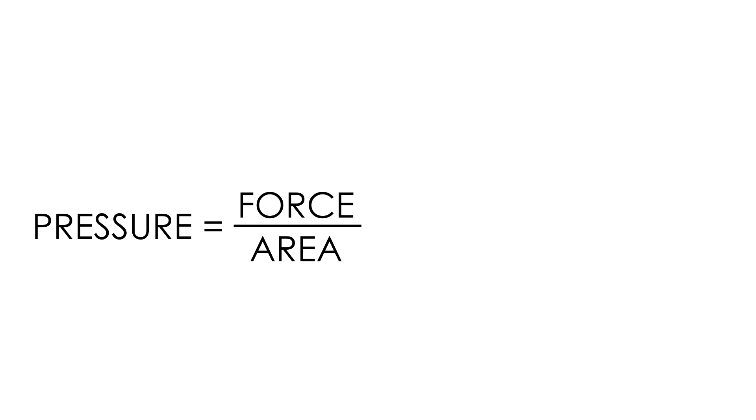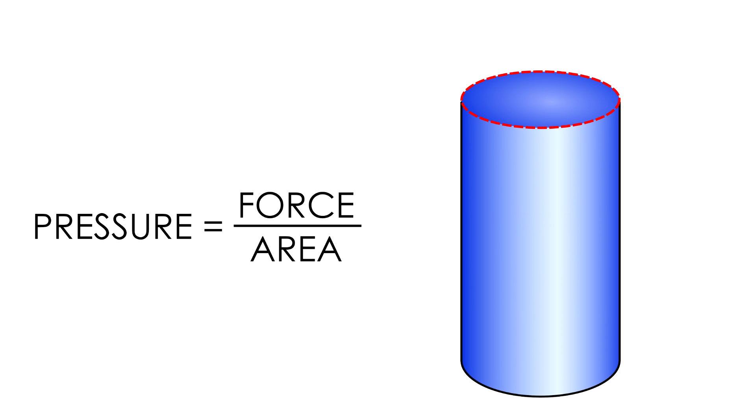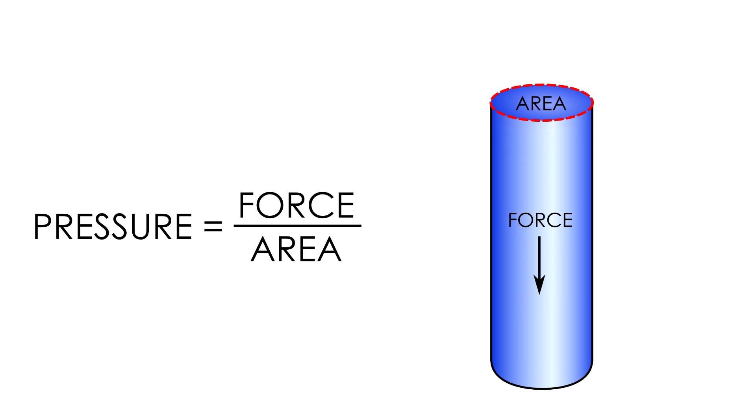Pressure is force divided by area. The force in this case being the weight of the fluid. If you shrink a column of water but keep it at the same height, you decrease the force, but you've also decreased the area